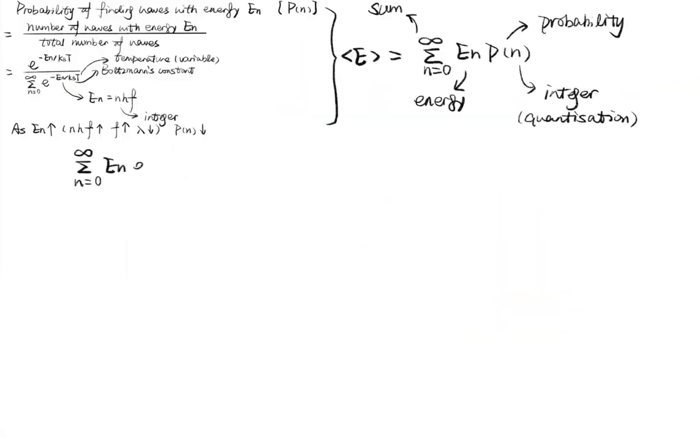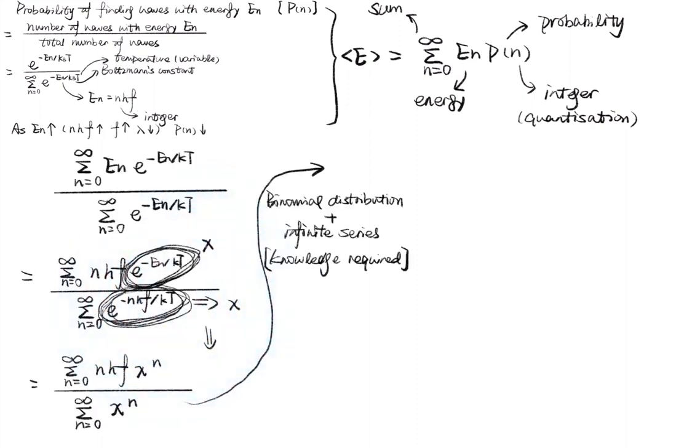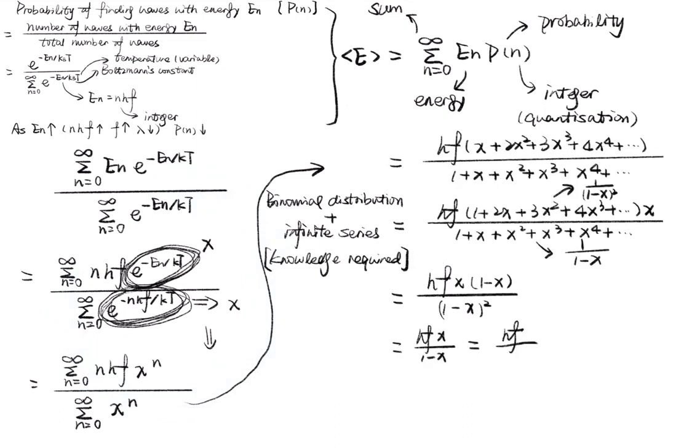If you're interested, the probability equation can be simplified by replacing this with x. Then, with the knowledge of binomial expansion, the infinite series can be rewritten as such.